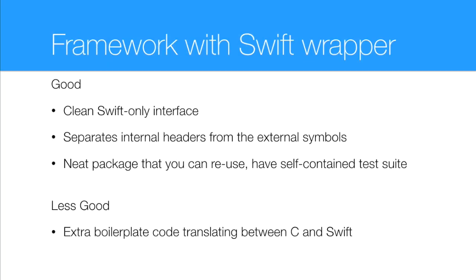To wrap up that example: we're now using Swift only in our interface, and there's complete separation between the C code and the main app. This creates a reusable package — you can take this framework and use it in another project, give it its own unit test suite. It's a much more convenient way of taking your C code and using it. The downside is you actually had to write those wrappers. The good thing is you got to write them exactly the way you wanted, with exactly the interface needed to meet your application's needs.